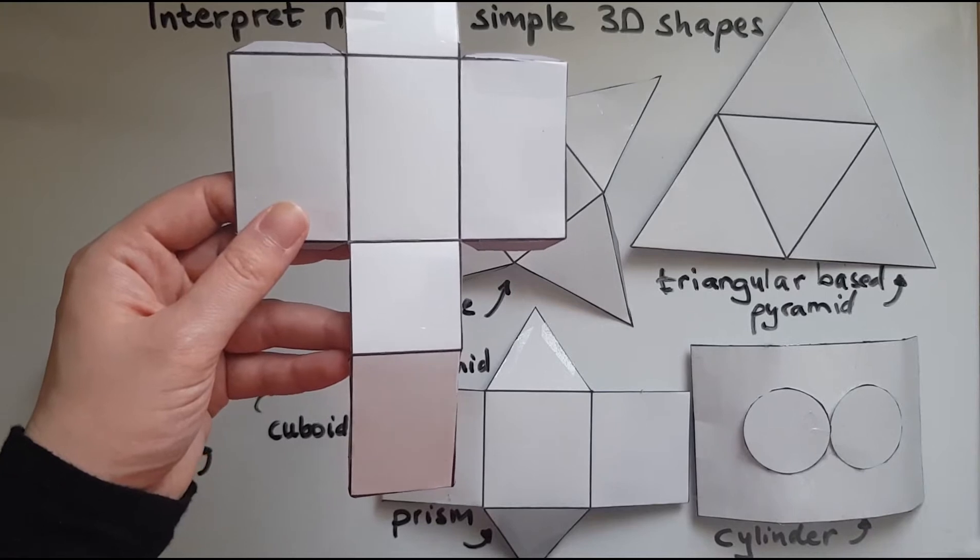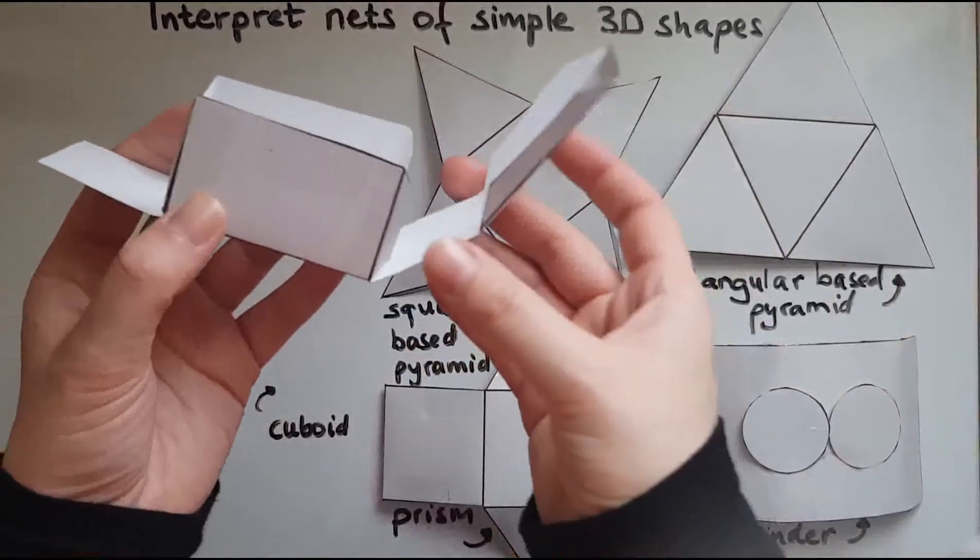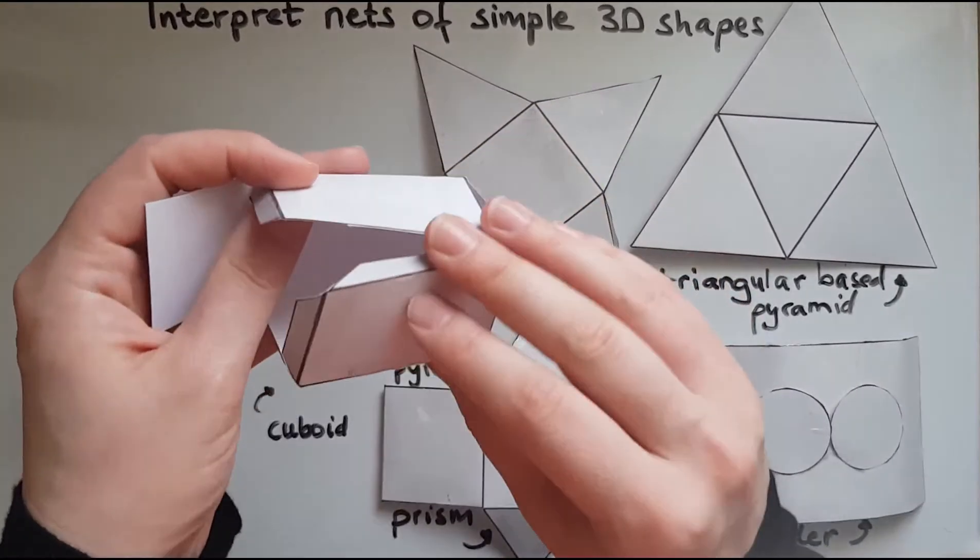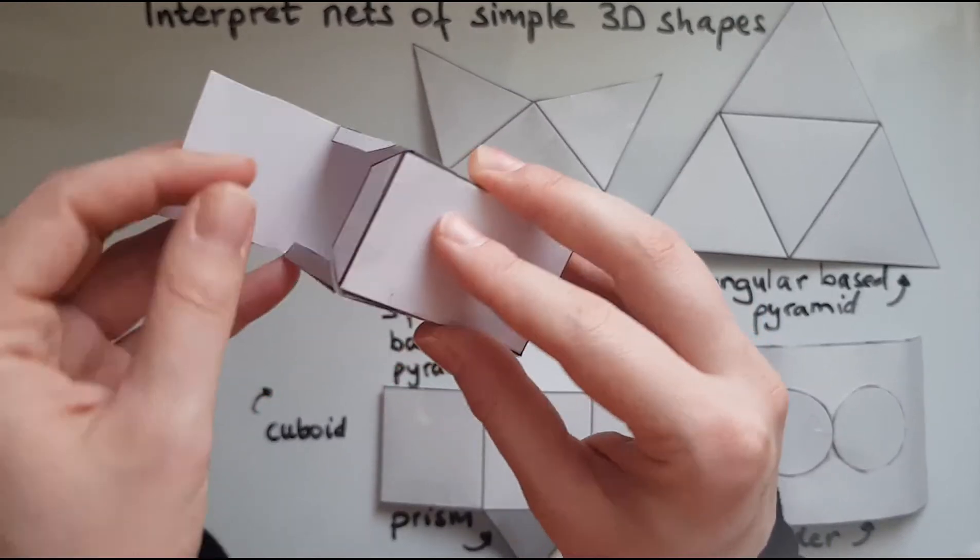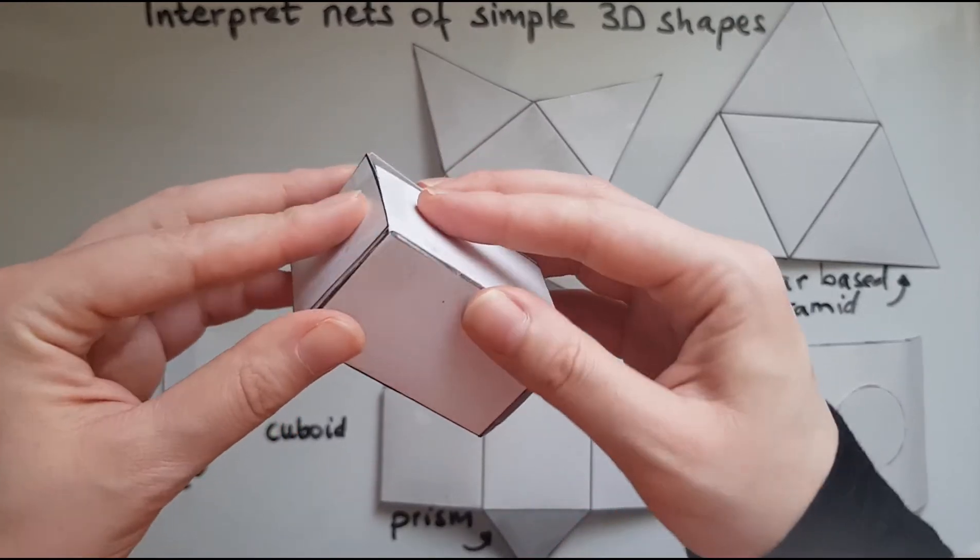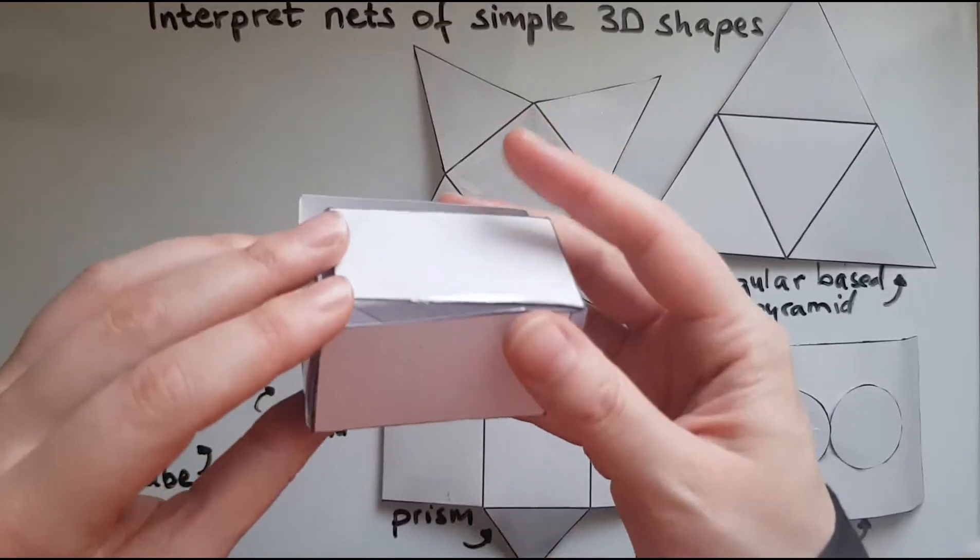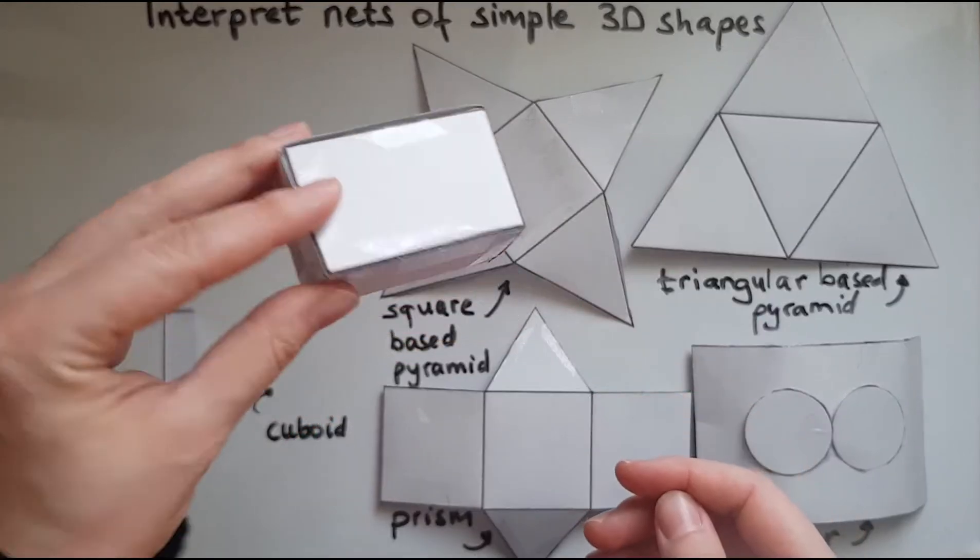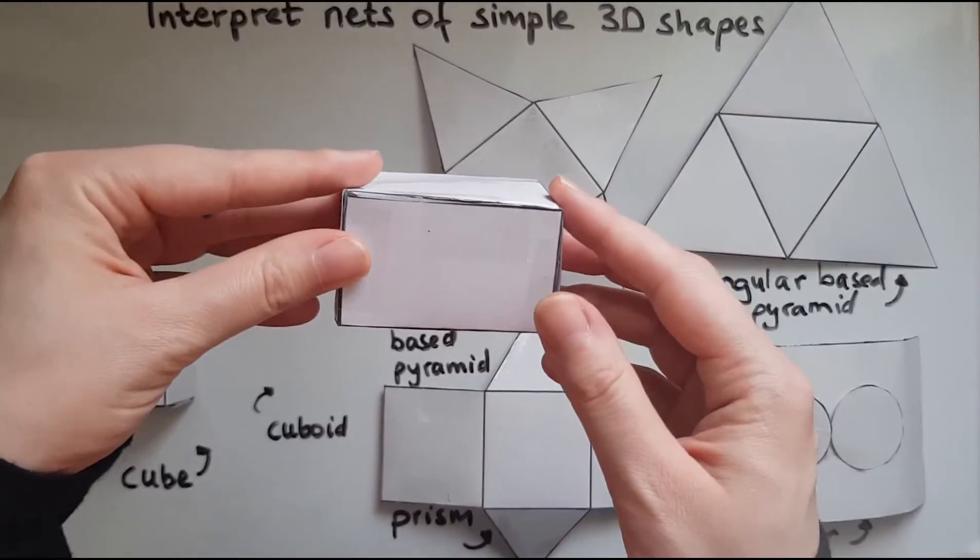And that's the cuboid because the cuboid has four rectangles. And it has two squares in this case, but it could have all six rectangles as well. So as you can see, we've made a cuboid.